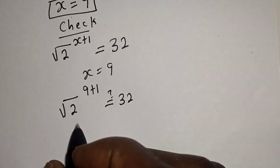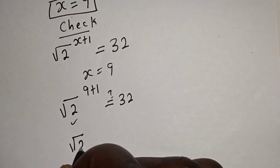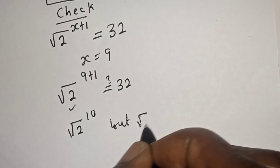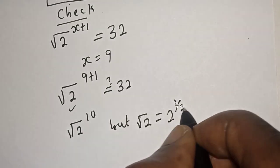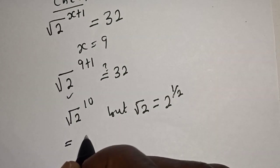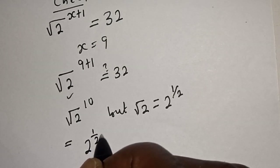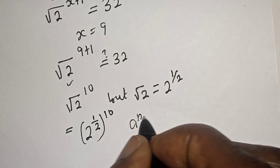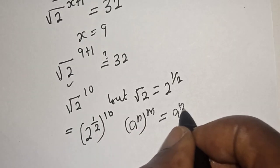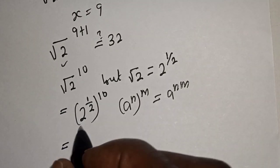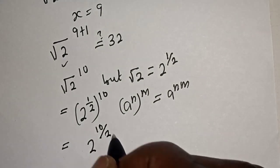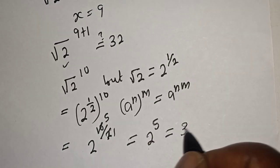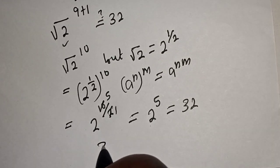This gives us square root of 2 raised to power 10. The square root of 2 is equal to 2 raised to power 1 over 2, so the left hand side is equal to 2 raised to power 10, times power 1 over 2. Using the exponent rule, this is equal to 2 raised to power 10 over 2, which is 2 raised to power 5, equal to 32.